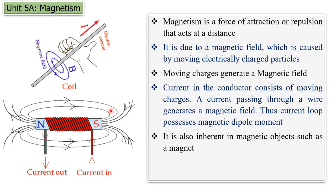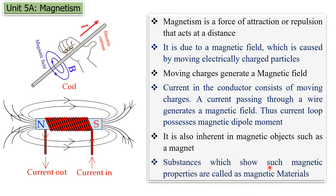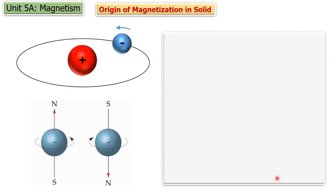Now this property is actually inherent in some materials — for example, a magnet. It shows magnetism, it shows magnetization property. Similarly, certain materials show such magnetic properties; those are called magnetic materials. Now why do these magnetic materials or why does this magnet show magnetization? What is the cause of magnetization inside the material? That we are going to see now.